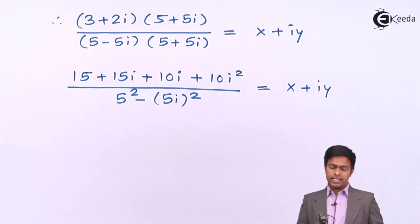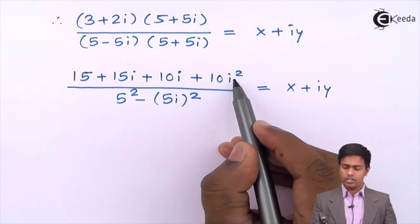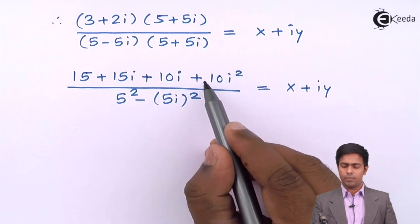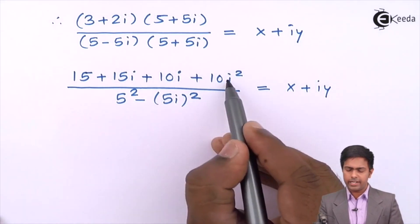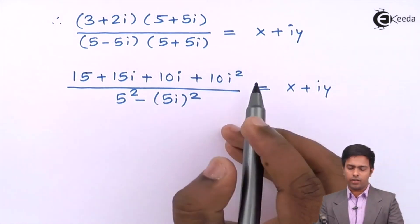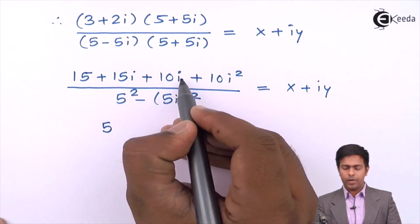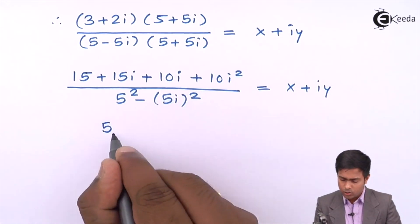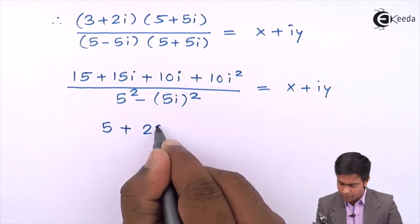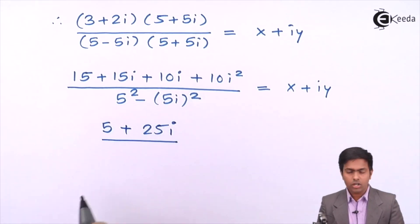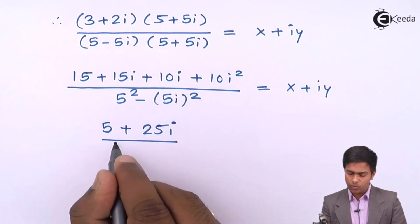Again, i squared equals minus 1, so 10i squared becomes minus 10. In the numerator, 15 minus 10 gives 5, and 15i plus 10i gives 25i. So the numerator is 5 plus 25i. In the denominator, 5 squared is 25, and minus(5i) squared gives minus 25 times minus 1, which is plus 25, so the denominator is 50.